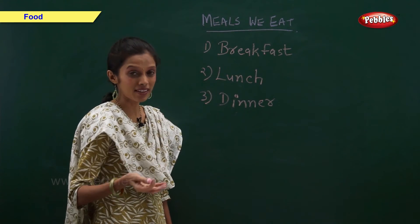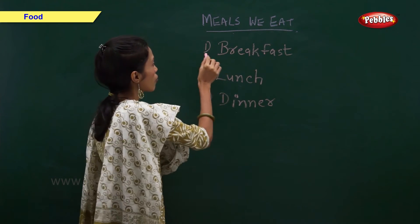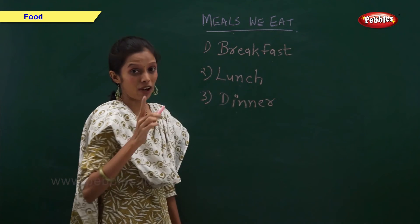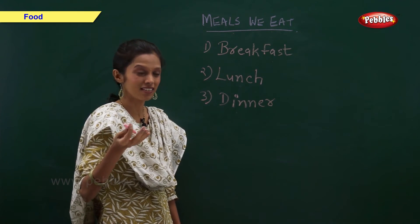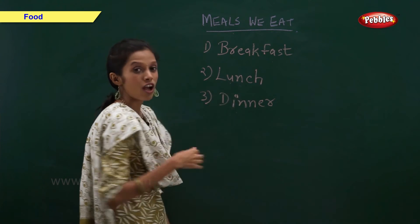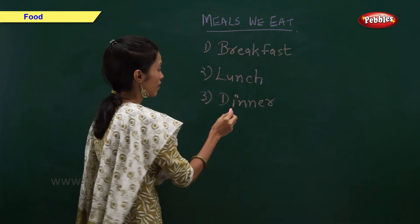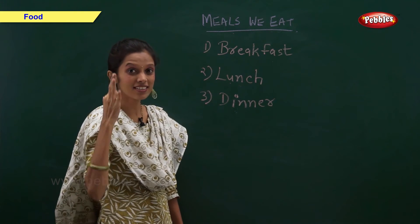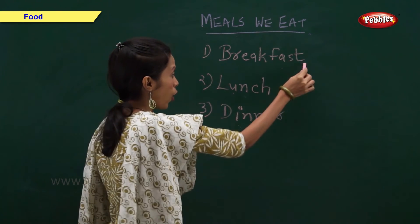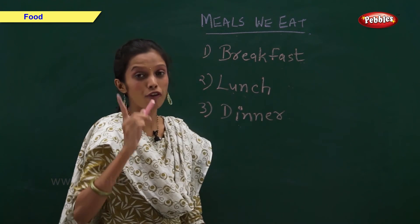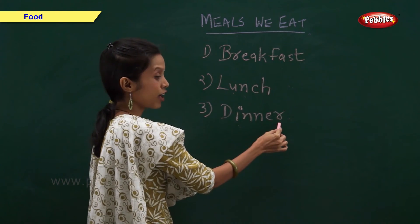Now, let us have a look at the meals we eat every day. Breakfast is the first meal we eat in the morning. Lunch is the second meal we eat in the afternoon. Dinner is the third meal we eat in the evening. All three meals are very important for us and we should not skip any one of them.